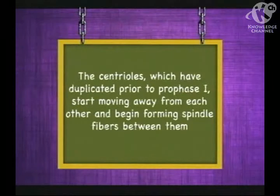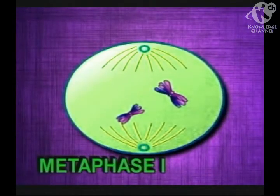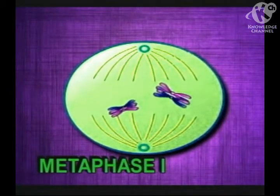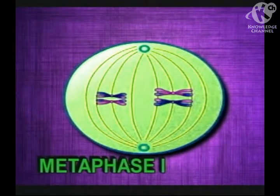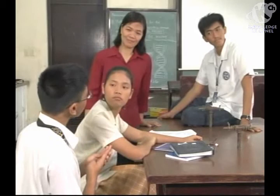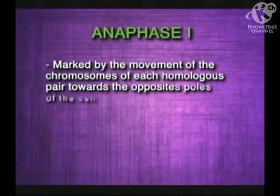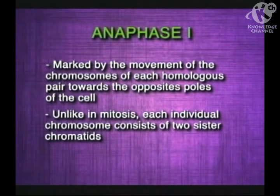As prophase I proceeds, nucleoli and the nuclear membrane disappear. The centrioles, which have duplicated prior to prophase I, start moving away from each other and begin forming spindle fibers between them. During metaphase I, the homologous chromosomes align at the middle of the cell between the two poles where the centrioles are located. Spindle microtubules from one pole attach to one of the homologous chromosomes, and microtubules from the opposite pole attach to the other chromosome. Anaphase I is marked by the movement of chromosomes of each homologous pair towards the opposite poles of the cell. Unlike in mitosis, each individual chromosome consists of two sister chromatids.